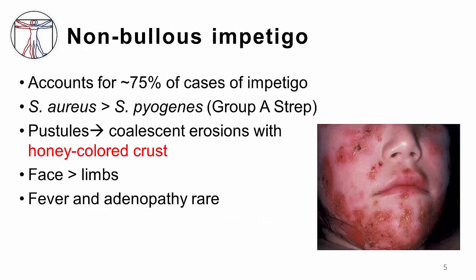There are two types of Impetigo: bullous and non-bullous. Non-bullous disease is significantly more common than bullous disease, and can be caused by either Staph aureus or Strep pyogenes; however, Staph aureus is the main etiology.